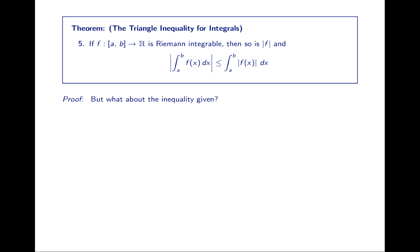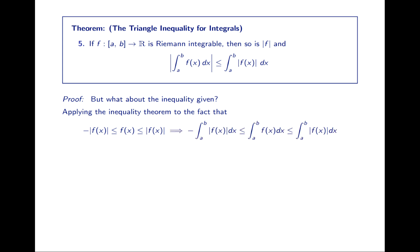We still need to prove the inequality itself. Applying the inequality theorem we've just proved, to the fact that f(x) is bounded below by −|f(x)| and above by |f(x)|, means the same holds for the integrals: the integral of −|f| is less than or equal to the integral of f, which is less than or equal to the integral of |f|. That's equivalent to saying the absolute value of the integral is less than or equal to the integral of the absolute value. These two statements are equivalent, and now we've proven our theorem.